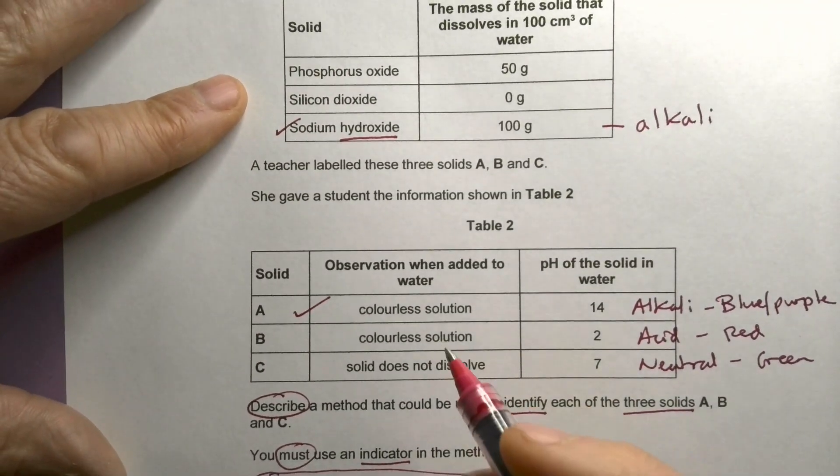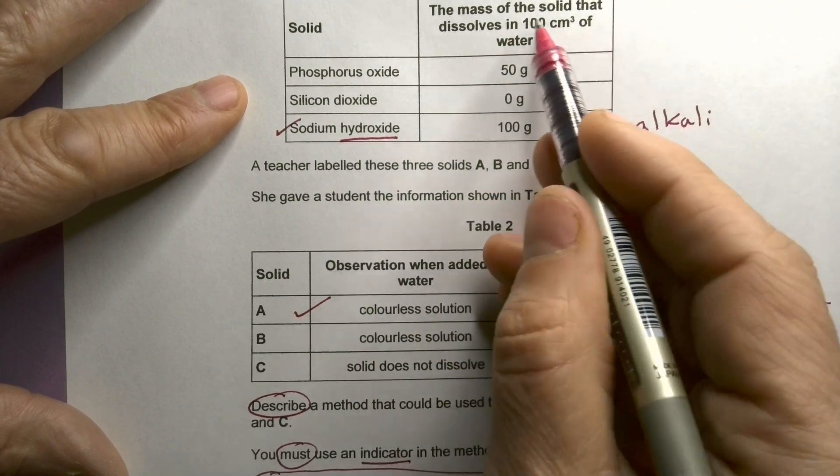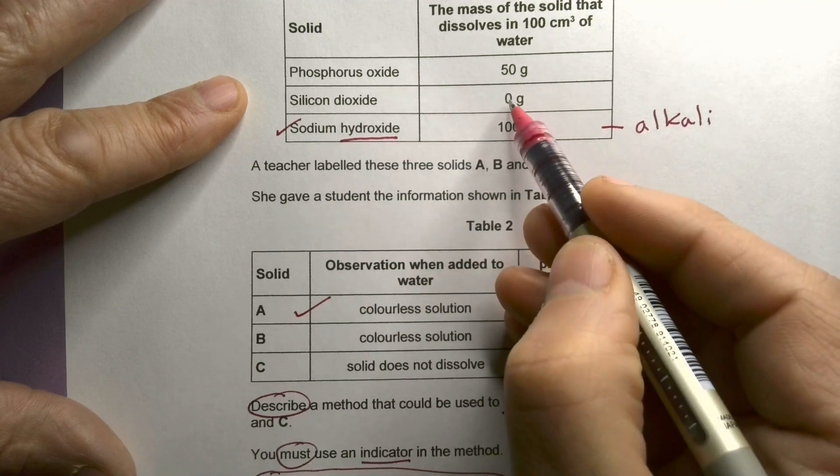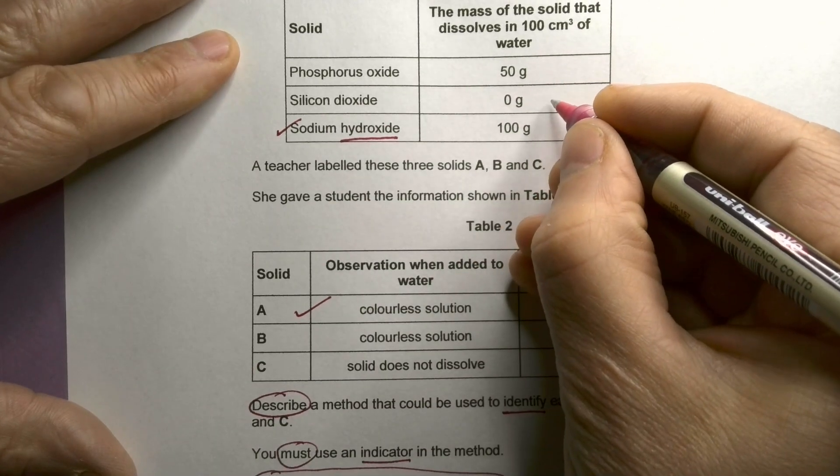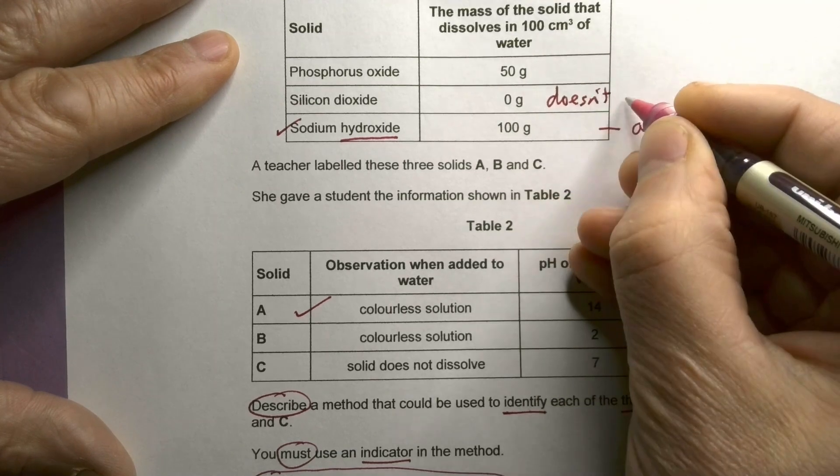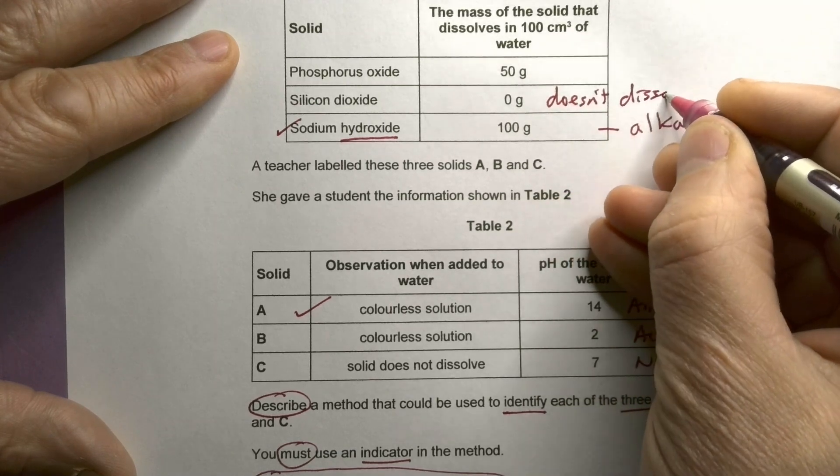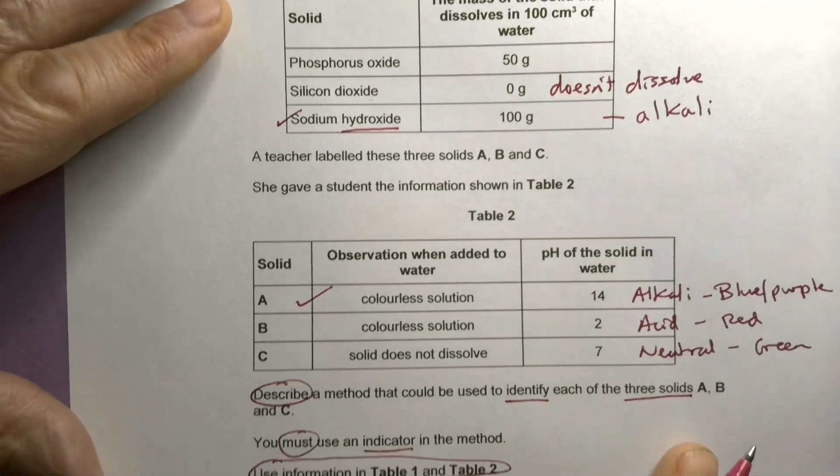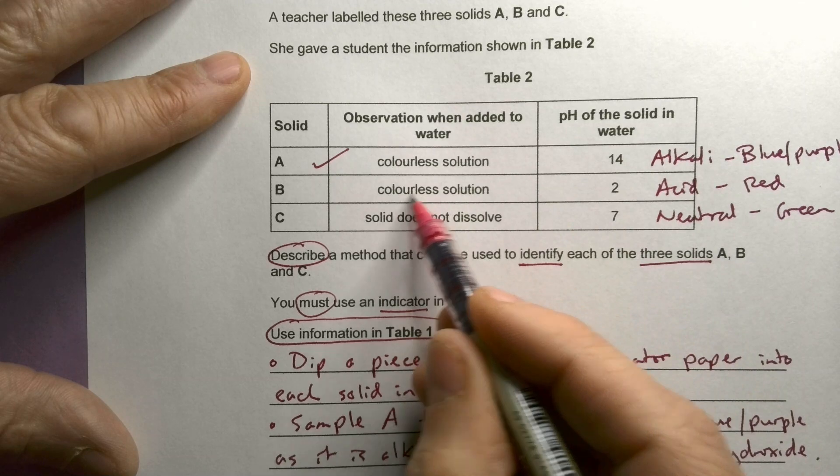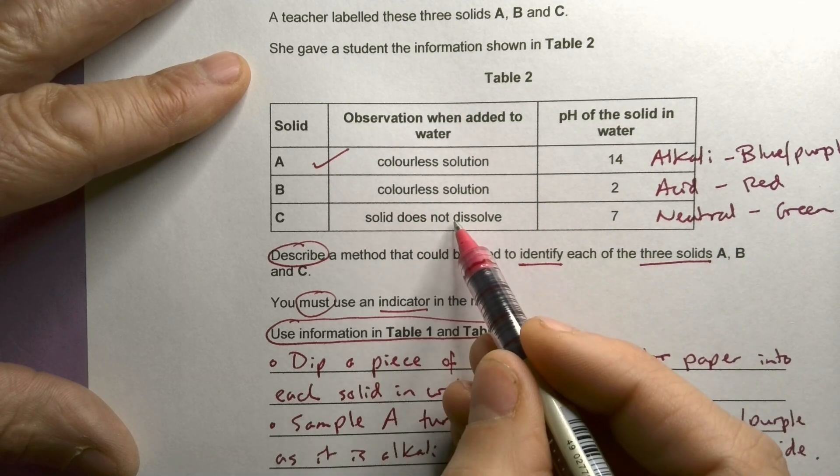Well, I know that the mass of solid that dissolves in 100 centimeters cubed of water. Silicon dioxide doesn't dissolve. None of it dissolves at all. Okay, silicon dioxide, none of it dissolves. So if I look here, observation when added to water, I'll get a color of the solution. Solid does not dissolve. Brilliant.